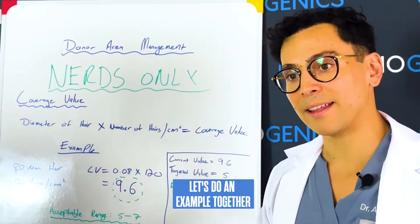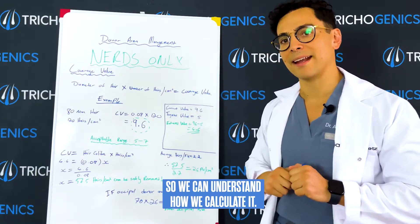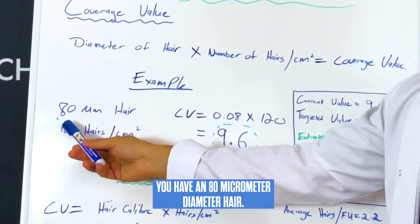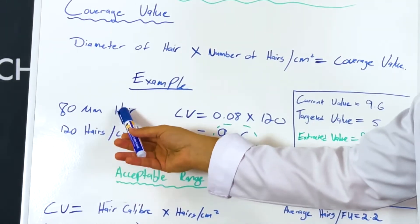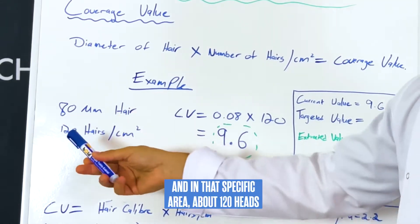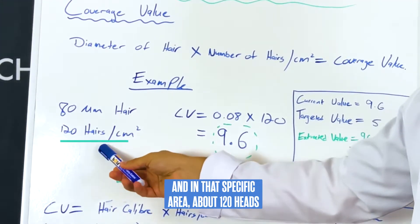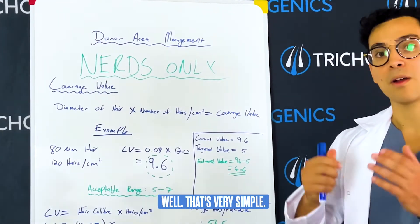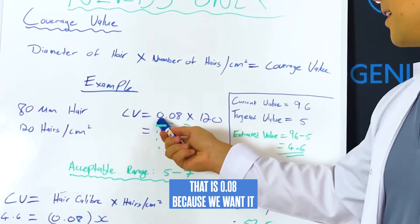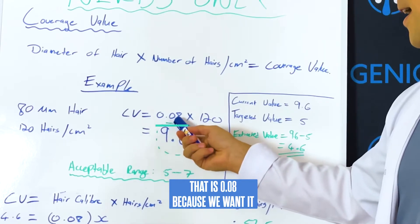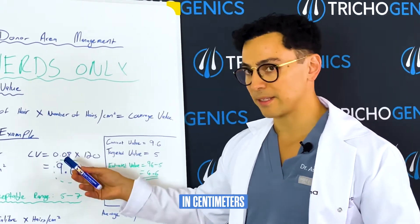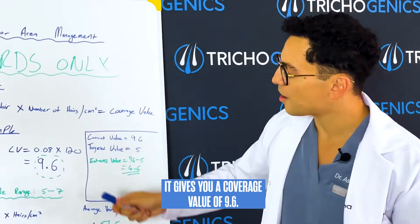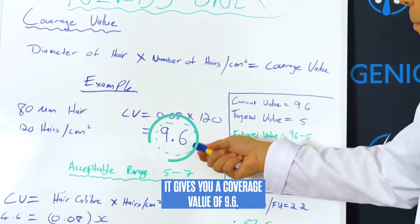Let's do an example together so we can understand how we calculate it. Say you have an 80 micrometer diameter hair, and in that specific area about 120 hairs per square centimeter. So what will your coverage value be? That is 0.08, because we want it in centimeters, times 120 hairs — it gives you a coverage value of 9.6.